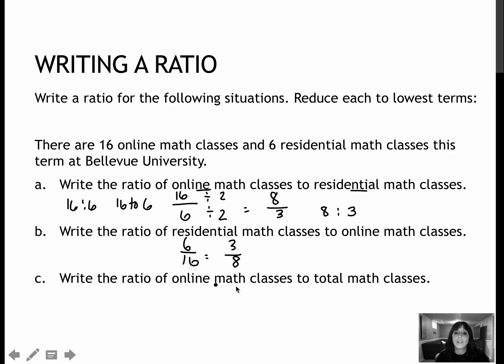If we're writing a ratio of online math classes to total math classes, there are 16 online classes. How many total classes? 16 plus 6, which is 22 classes, that's the total classes. Again we will reduce just as we normally would. I will divide by 2 to get 8 and divide by 2 to get 11, and it makes sense that that denominator would be 11, since if I added 8 and 3 that would give me 11 total classes in lowest form.